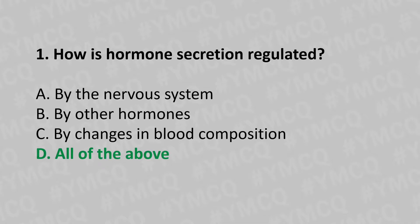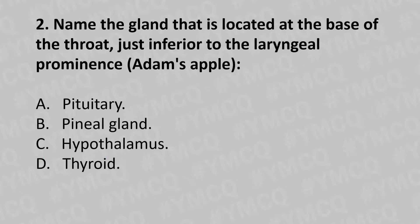Moving to our second question. Name the gland that is located at the base of the throat, just inferior to the laryngeal prominence (Adam's apple). Option A: pituitary. Option B: pineal. Option C: hypothalamus. Option D: thyroid. And the answer is Option D: thyroid.